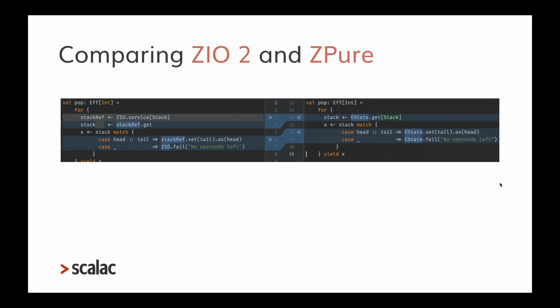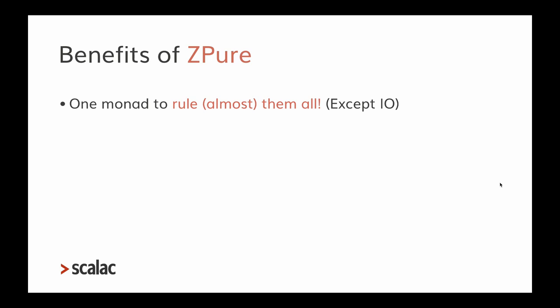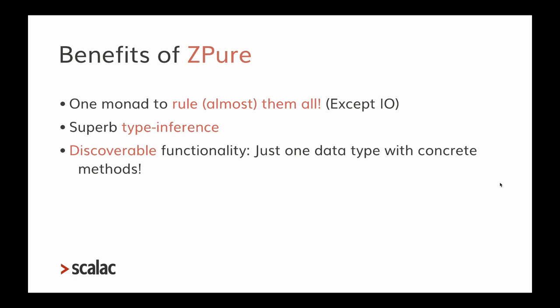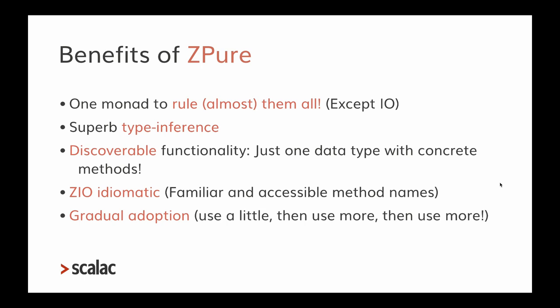The benefits of ZPure: it's one monad for almost everything except I/O, with superb type inference, discoverable functionality, ZIO-idiomatic familiar method names, gradual adoption, and great performance. Here's a quick benchmark of all the solutions: the ZPure solution is far more performant than the others, especially the monad transformers solution. ZIO 2 is also more performant than monad transformers, but not as fast as ZPure.